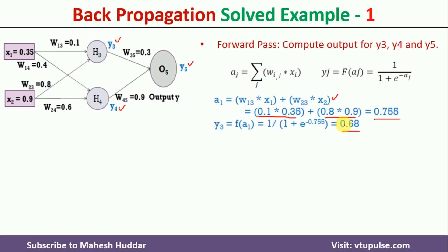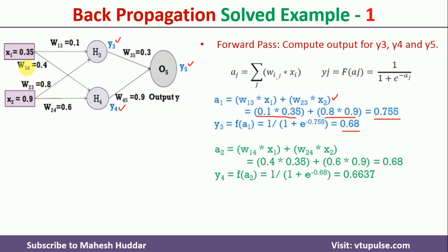Similarly, we calculate the output at h4: a2 = w14 × x1 + w24 × x2, which gives a2 = 0.68. Applying the activation function: y4 = 1 / (1 + e^(−0.68)) = 0.6637.